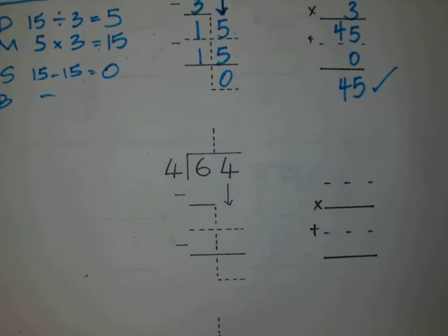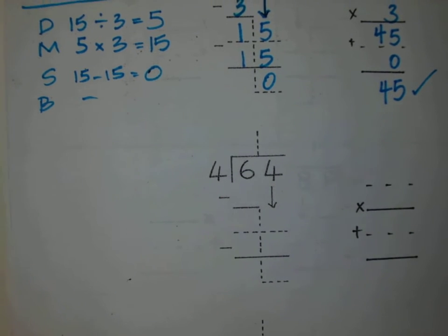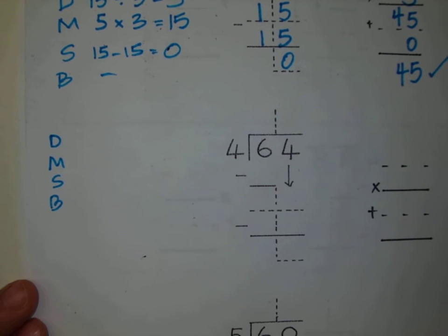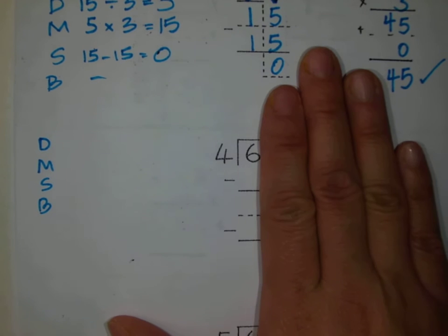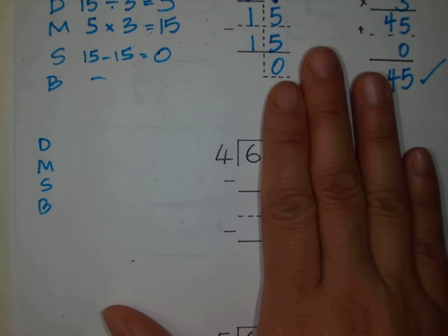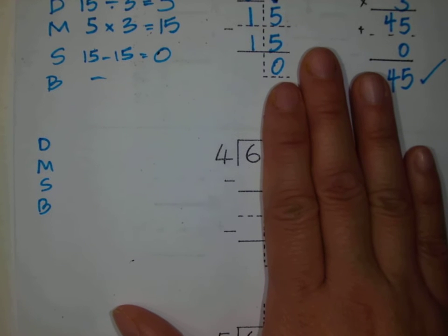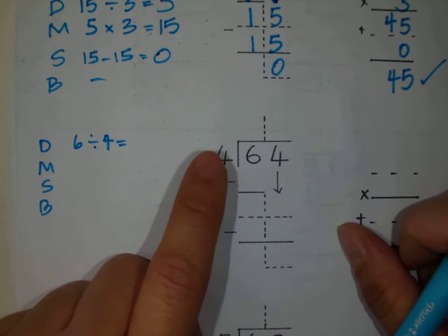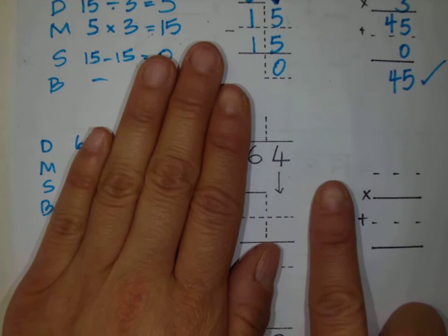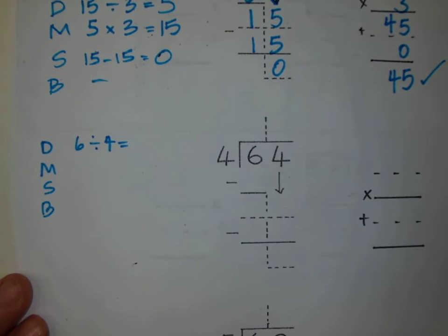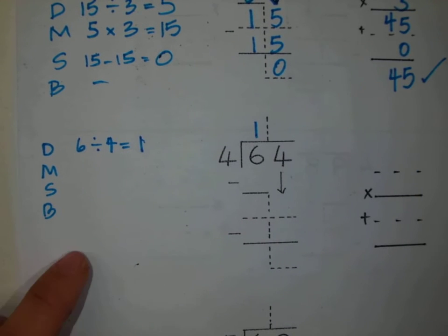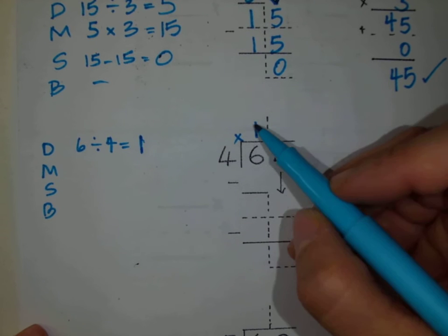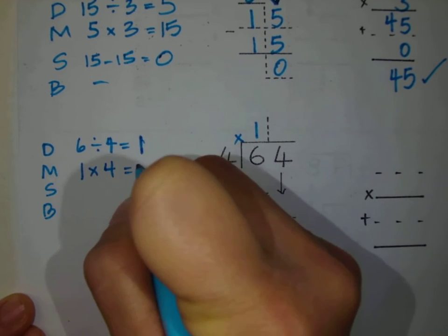Let's go ahead and move on to the second problem: 64 divided by 4. I'm going to show my long division steps again here on the left — I would like you to do the same. I'm going to cover up this 4 in the ones place. Our first step is daddy divide. What you're dividing is 6 divided by 4 — how many groups of 4 can I make out of 6? Just one group, so this equals 1. I'm going to write 1 here. The second step is mommy multiply: 1 times 4 equals 4.